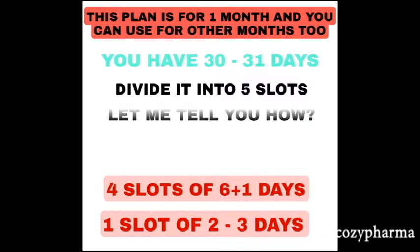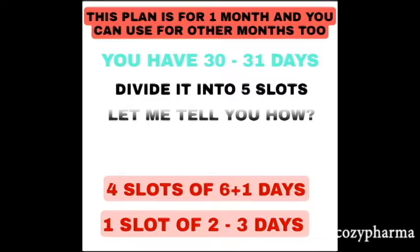Now, giving your full attention to this slide: we're taking an example of how to prepare your timetable for a month. You have 30 to 31 days and you can divide them into five slots — four slots of six plus one days, and one slot of two to three days. We'll be covering what to do in each slot in the next slides. First, let's understand the concept of major subject and minor subject before going into the weekly timetable.